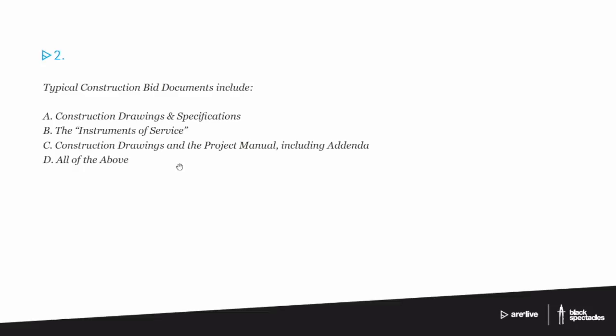Question two: typical construction bid documents include — possibilities are: A, construction drawings and specifications; B, the instruments of service; C, construction drawings and the project manual including addenda; D, all of the above. Note that NCARB has decided to get rid of 'all of the above' questions, so this isn't a great example of what you'd see on the exam, but the point is to get you thinking about the accretion of information.